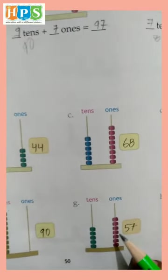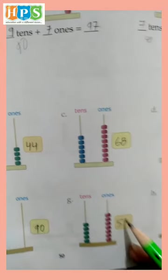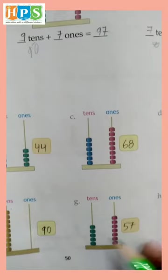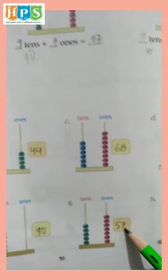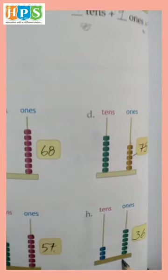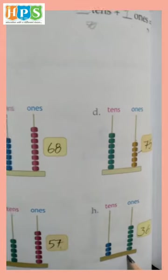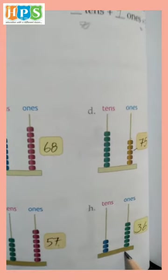One, two, three, four, five, six, seven - seven ones, one, two, three, four, five - five tens equals fifty-seven. One, two, three, four, five, six - six ones and one, two, three - three tens equals thirty-six.